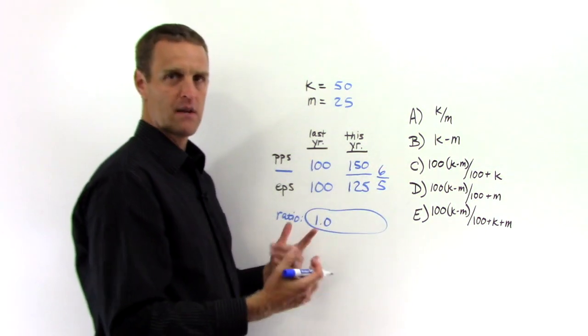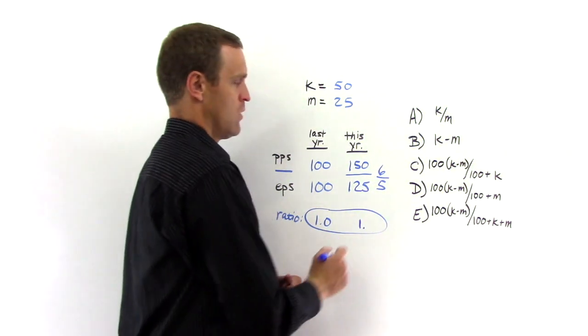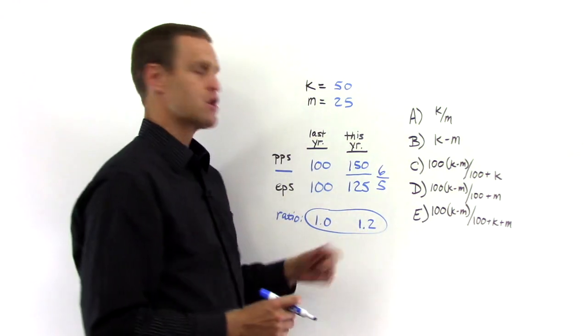I'm going to convert that to a decimal because the percent change will be easier. Six over five goes in 1.2. So that ratio is 1.2.